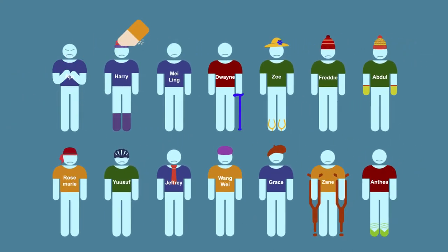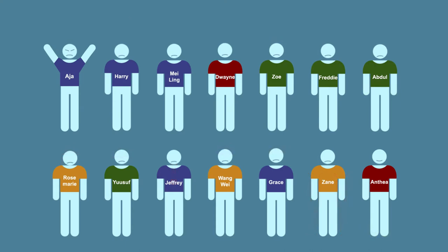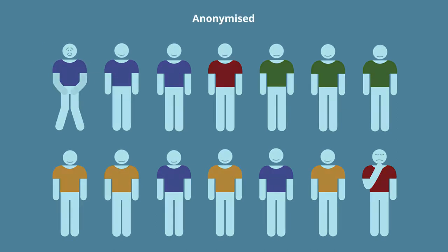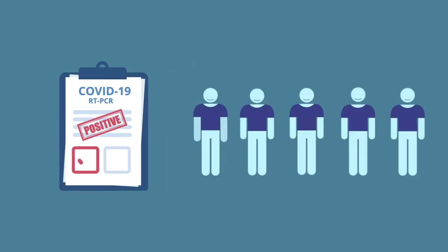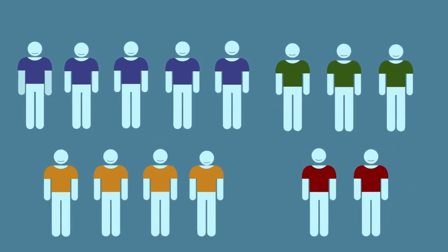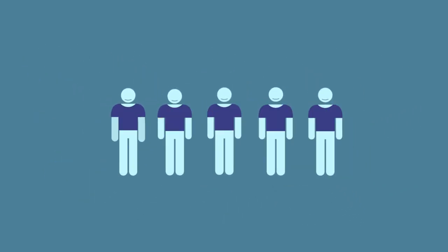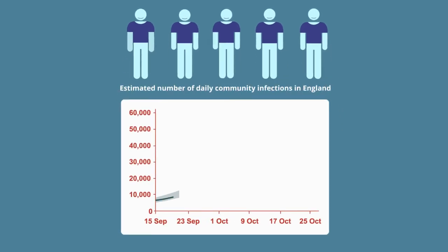Removing information that could identify a person is often called de-identifying data. Data where all information that could identify an individual has been removed is sometimes called anonymized data. Like news reports about COVID cases, where statistical information from many people is combined. Data like this does not have to be protected in the same way as identifiable data.